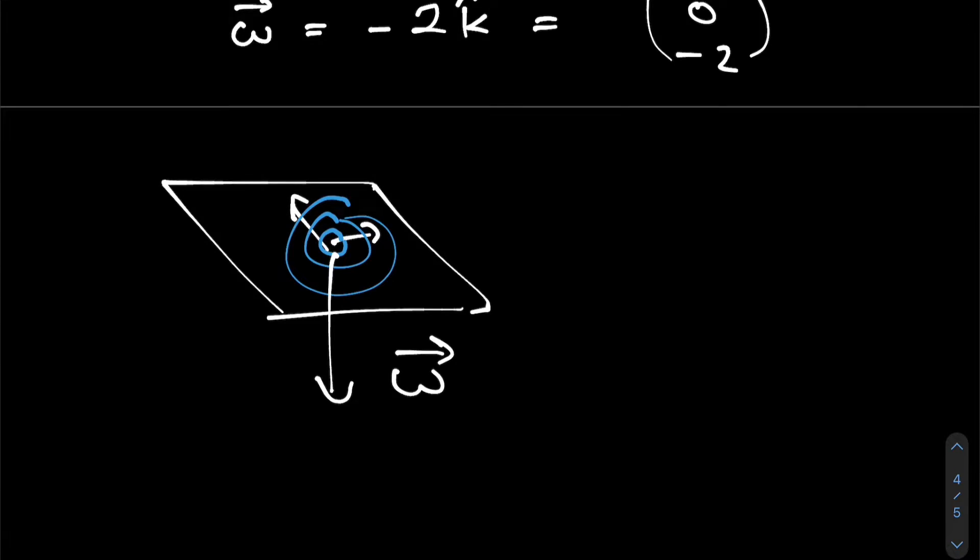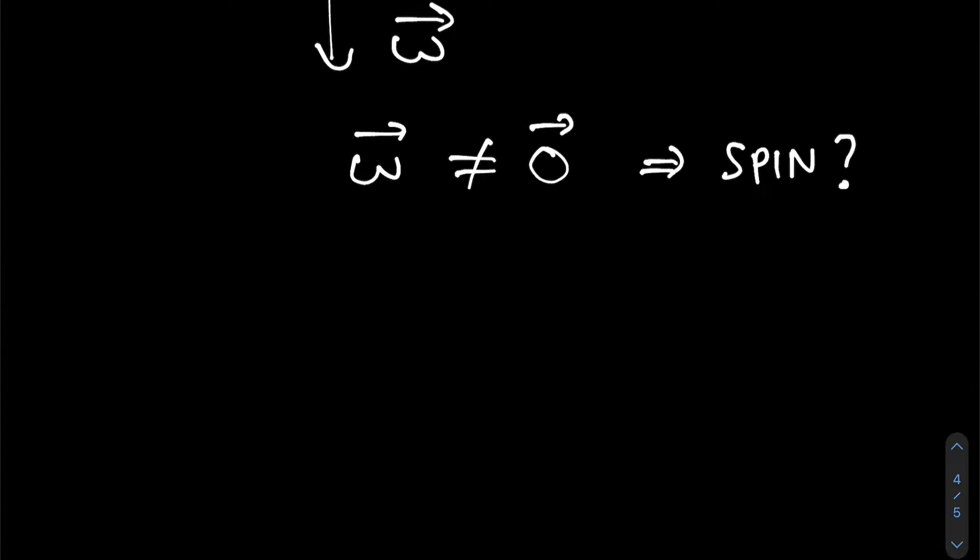However, this idea of vorticity as curl or spinniness can get counterintuitive sometimes. Can we always say that any flow where omega is not the zero vector will look like it's spinning? Let's look at another example.